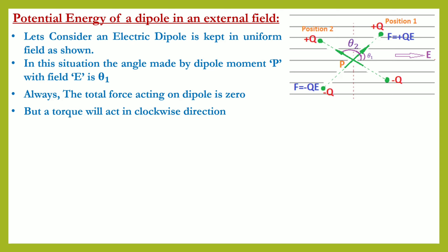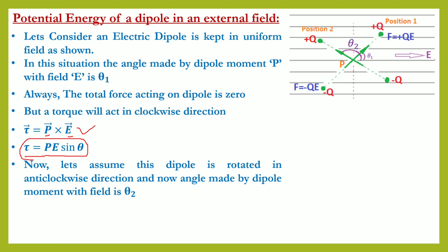The tendency of the dipole is to rotate in the clockwise direction. Before proceeding, let me tell you how to calculate this torque. Torque is the cross product of dipole moment and electric field: τ = P × E. The magnitude is τ = PE sinθ, where θ is the angle between P and E. This formula was derived in a previous topic. Now, we will rotate the dipole in the anticlockwise direction using an external force, from angle theta 1 to angle theta 2 (position 2).